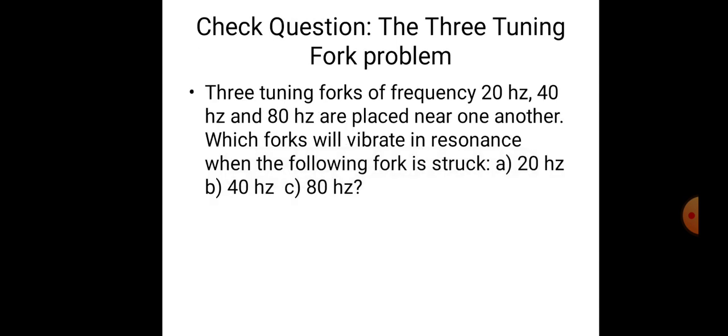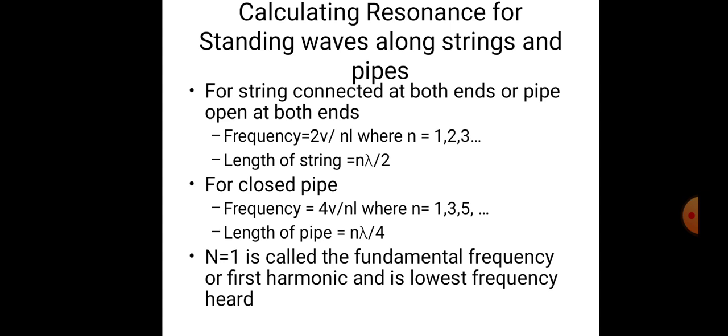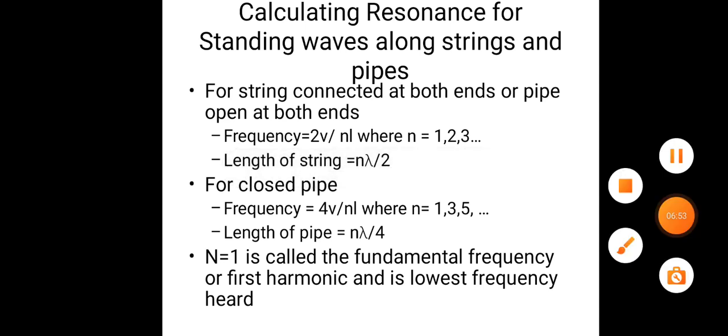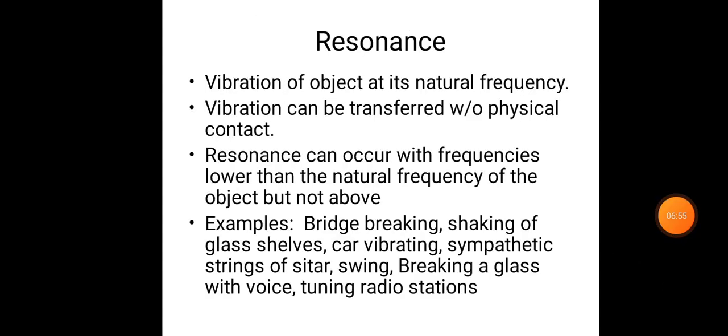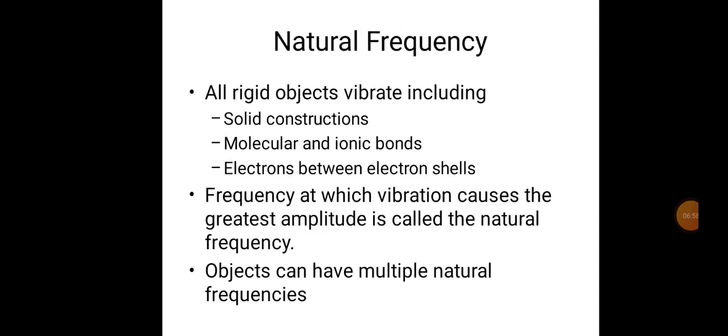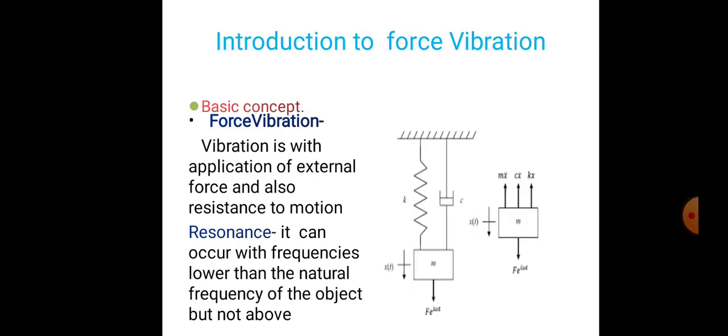So this is all about the conditions for frequency simulations and natural frequency. Once again repeating: forced vibration is vibration with the application of external force, and it has some resistance to motion if a damping condition is present. Resonance is similar but occurs when the forced frequency is equal to or lower than the natural frequency of the object.